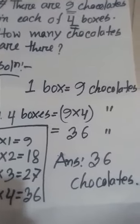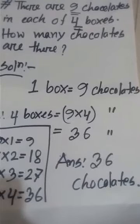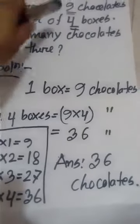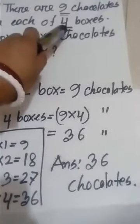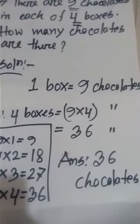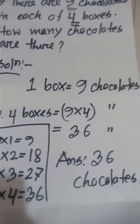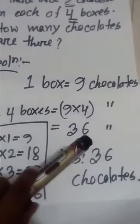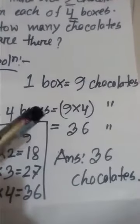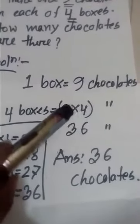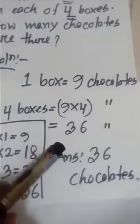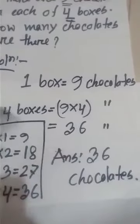Our question: There are 9 chocolates in each of 4 boxes. How many chocolates are there? So, 1 box equals 9 chocolates. Therefore, 4 boxes equal 9 times 4 equals 36 chocolates.